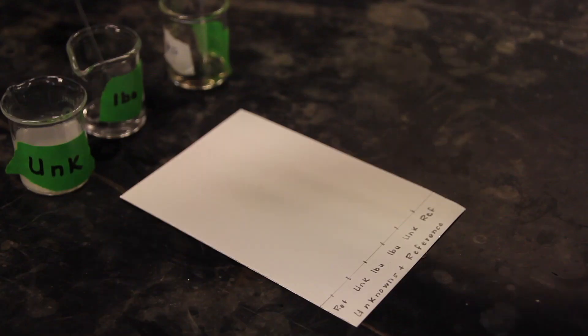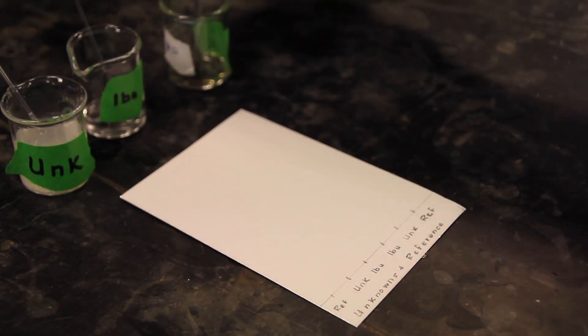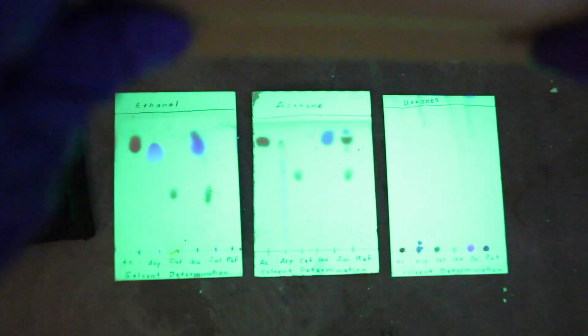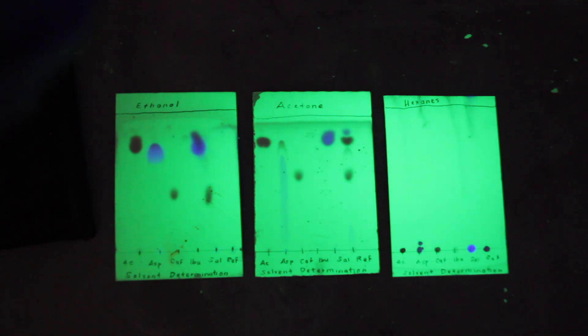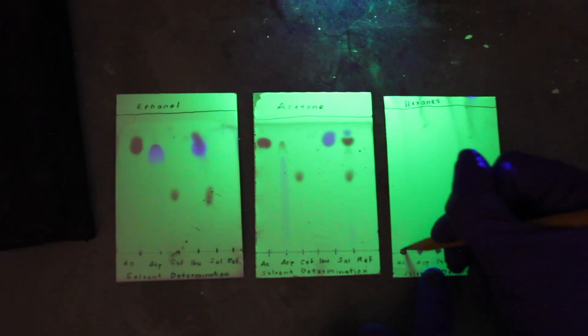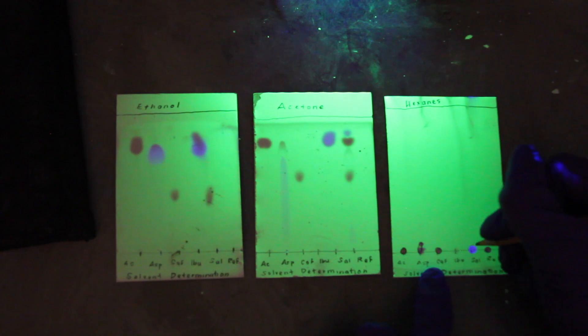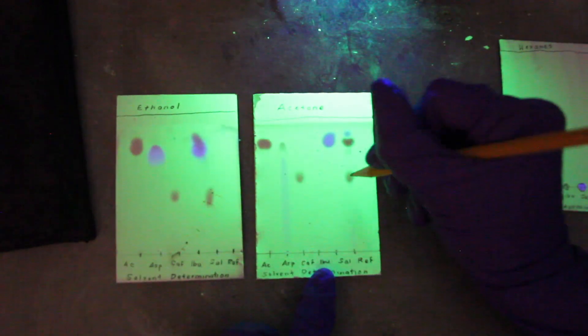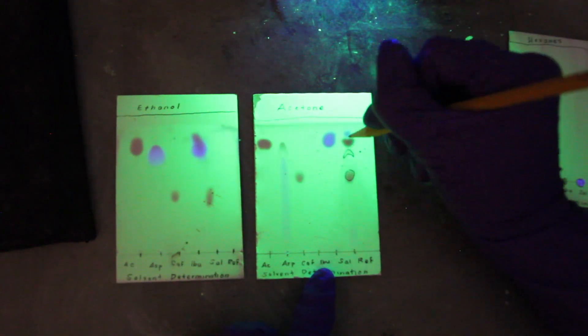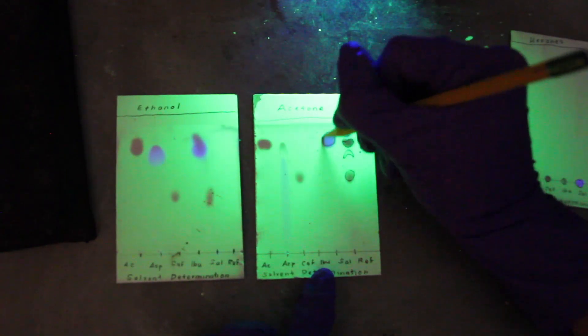Since all of the compounds under analysis are colorless, some method must be found to visualize them on the developed TLC plate. The plates will be placed under an ultraviolet lamp, and the positions and colors of the spots observed. The silica gel on these plates contains a fluorescent indicator, so the plates will have a faint glow under the UV lamp. Non-fluorescent compounds will appear as dark spots. If any of the compounds are fluorescent, which is the case for at least one of these in the experiment, its spot will glow intensely blue under the UV light.